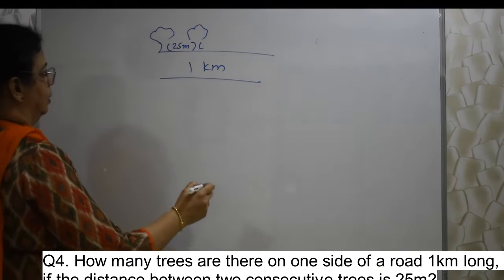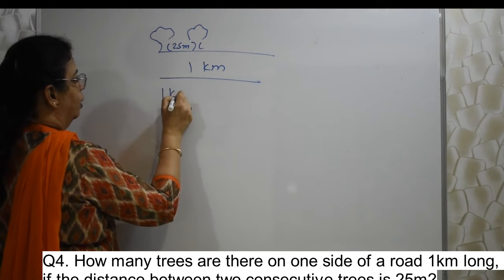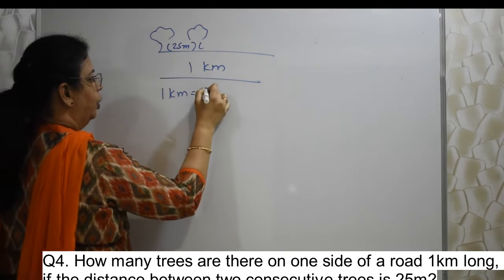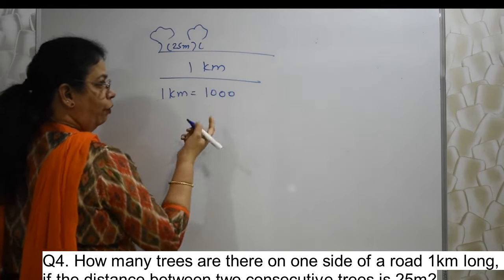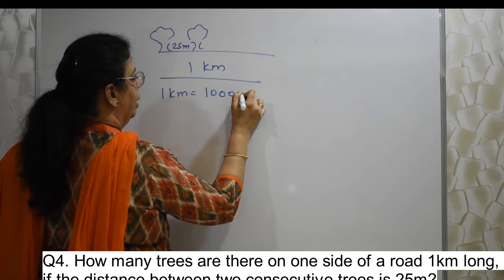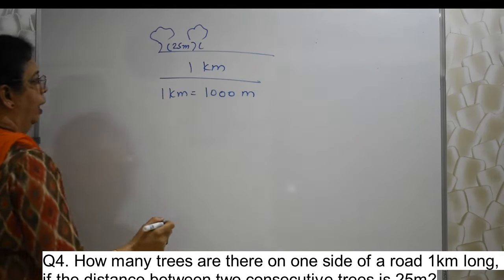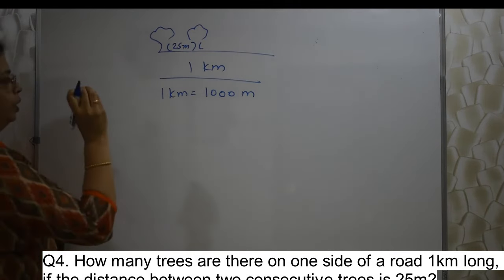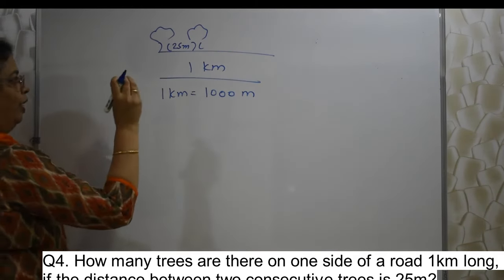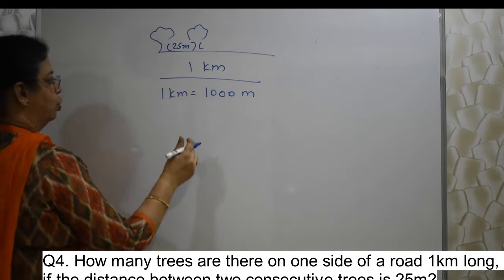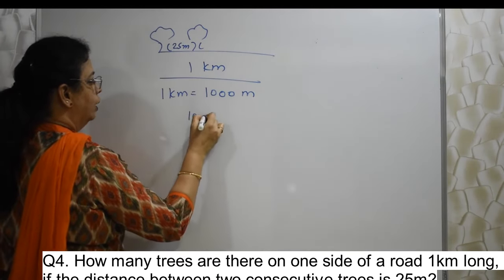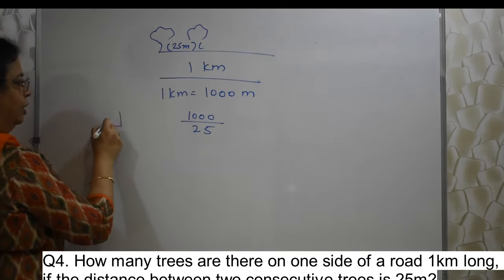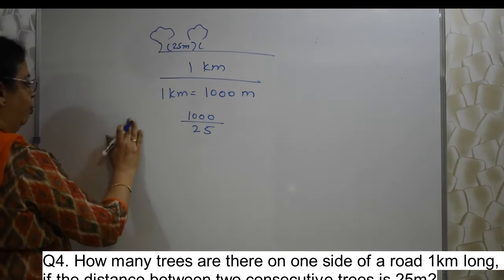And two consecutive trees have how much distance between them? 25 meter. So, let us first convert this one kilometer, because this is meter, this is kilometer. So, convert this kilometer into meter with the help of that box which I have given you in the beginning. Make use of that. So, one kilometer is equal to thousand meter. Now, we need to distribute to each tree 25, 25, 25. Distribute, so division. So, one thousand divided by 25. You can do it like that also. You can do it anyway. So, 25 ones are 25, 25 fours are 100. Zero.